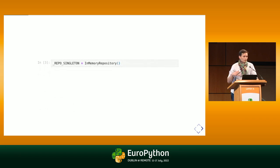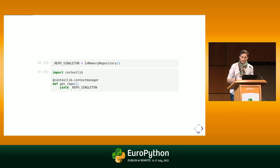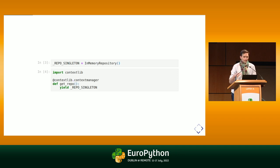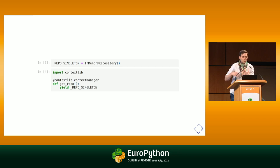Throughout the demo, I'm going to use a singleton to instantiate and store my locations. I will actually not use the singleton directly — I'll hide it behind a context manager so we have a nice abstraction to work with, especially if we needed to replace the repository with a wrapper around a database. So we get a repository instance and then work on it as if it were a dictionary of locations.